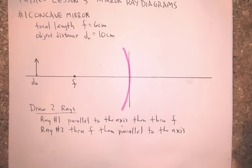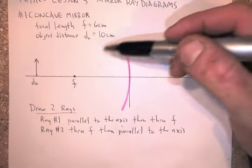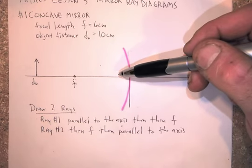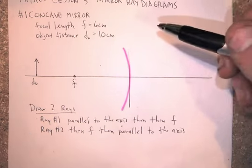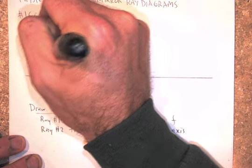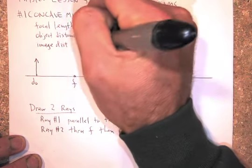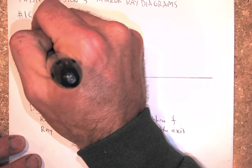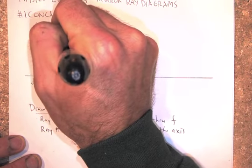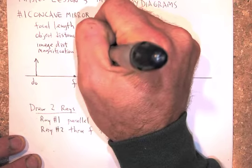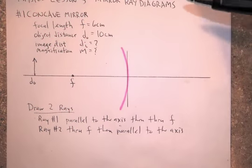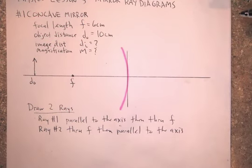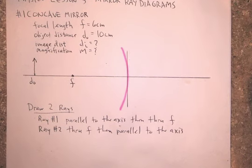So if we draw those two rays, it's going to show where the light goes, bounces off this mirror, and then where the image forms. The thing we're looking for is the image distance. Di is what we're looking for. We're also looking for the magnification, which would be a capital M. Those are our two goals. Find where the image forms, and find the magnification.